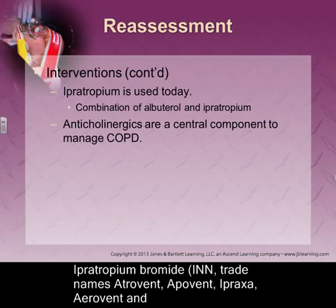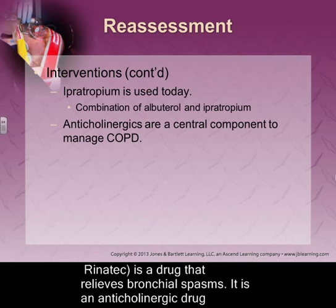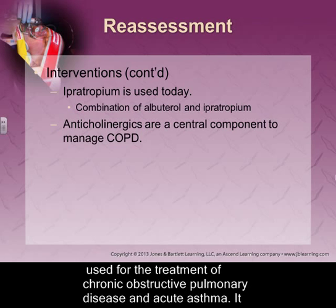One of the main medications we're going to give is a bronchodilator. When managing respiratory — other than oxygen — one of the more common medications is a bronchodilator. Albuterol is a beta-2 selective sympathomimetic, so it will cause bronchodilation. But at the same time it will cause increased heart rate, irritability, and increased blood pressure.